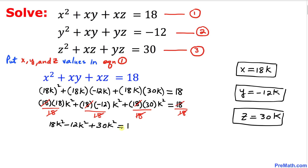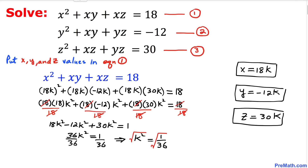Simplifying the left-hand side gives 36k squared equals 1. Dividing both sides by 36, k squared equals 1 over 36. Taking the square root, k equals positive or negative 1 over 6.